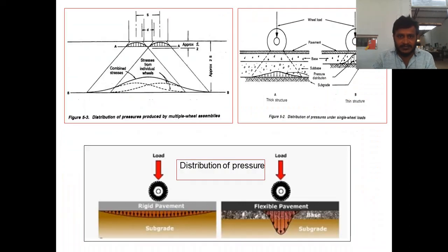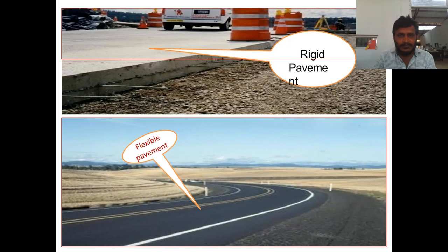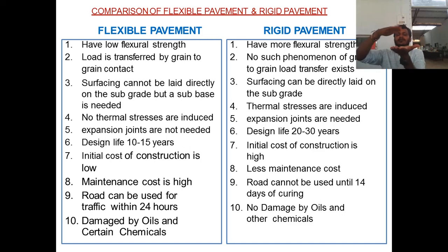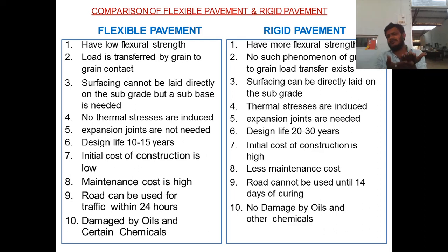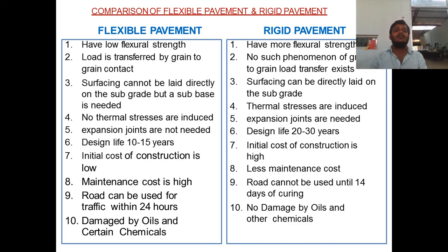In flexible pavement, load transfer is grain-to-grain and it spreads in a rectangular pattern. In rigid pavement, load transfer is in the form of slab action — the entire load is applied over the slab area. In flexible pavement, when a load is applied to one aggregate it is transferred to the aggregates below, and so on — grain-to-grain transfer takes place.